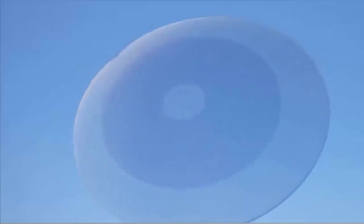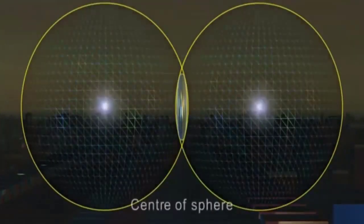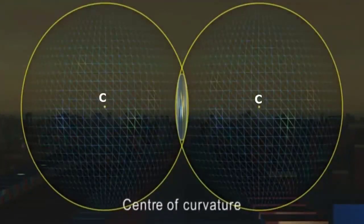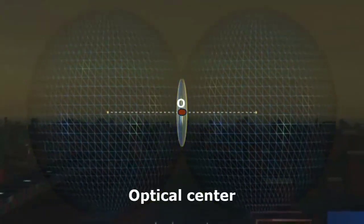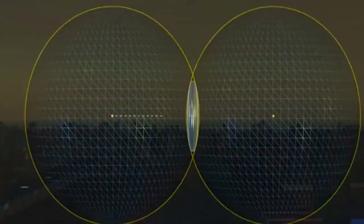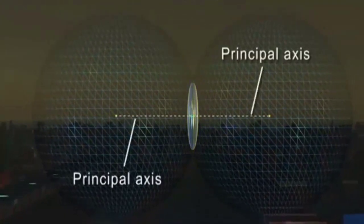Every side of the lens is a part of a sphere called a center of curvature. The midpoint of the lens is called the optical center O. The line passing from the optical center to the boundary of the lens is called the principal axis or optical axis.